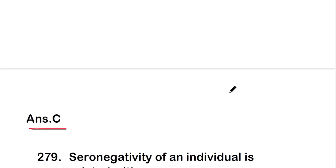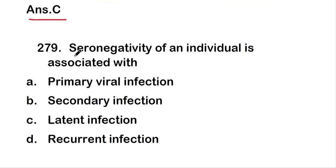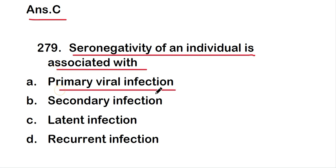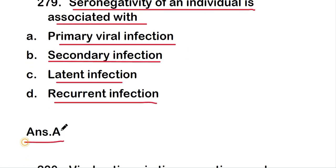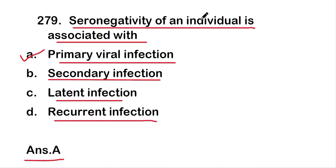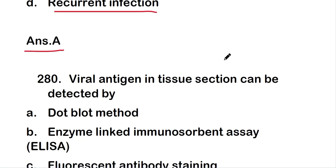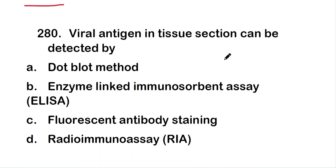The next question: seronegativity of an individual is associated with — primary viral infection, secondary infection, latent infection, or recurrent infection? The right answer is option A — primary viral infection. Seronegativity of an individual is associated with primary viral infection.